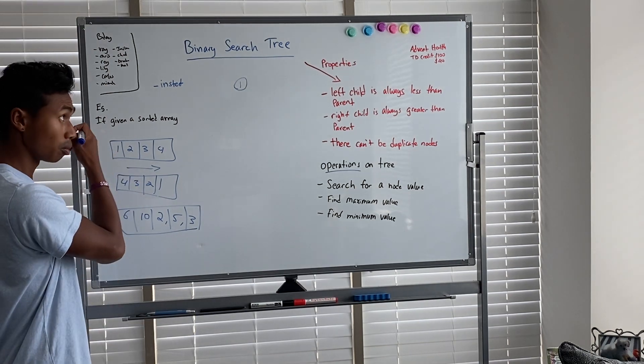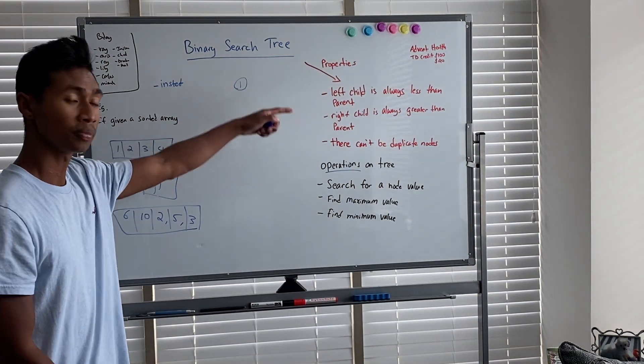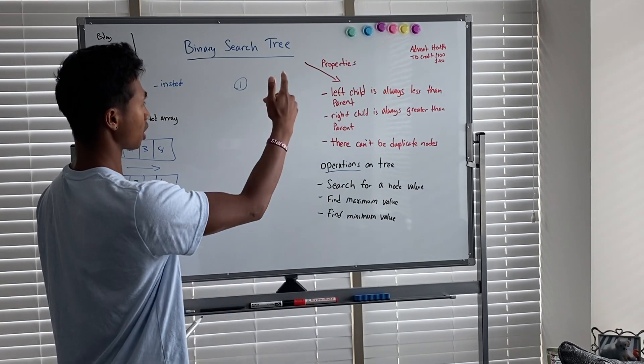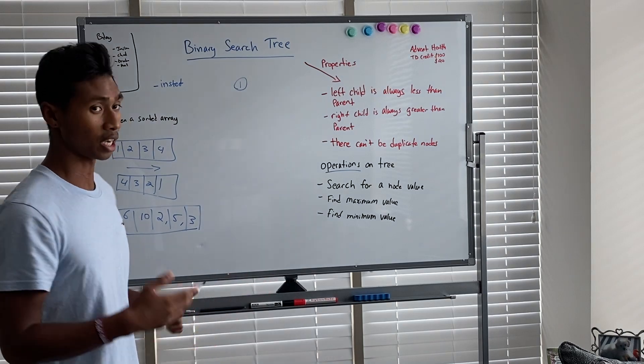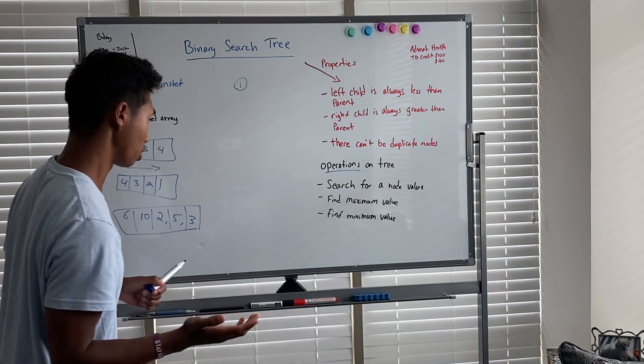And then we have to look at our properties over here. So the left child is always going to be less than the parent, the right child is always going to be greater than the parent, and there can't be any duplicate nodes.